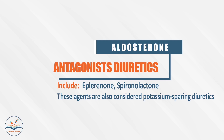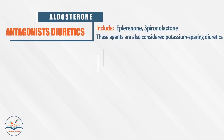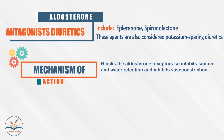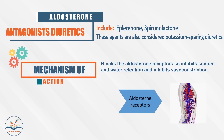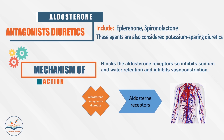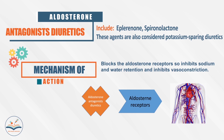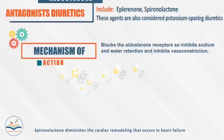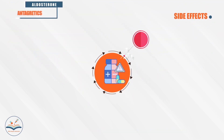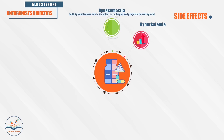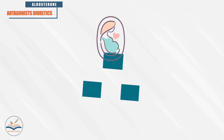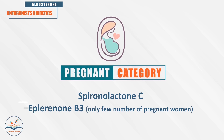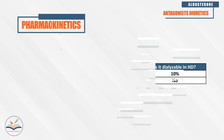Aldosterone antagonist diuretics, like spironolactone, are also considered potassium-sparing diuretics. They block aldosterone receptors in the CNS, kidneys, heart, and vasculature, inhibiting sodium and water retention and vasoconstriction. Spironolactone also diminishes cardiac remodeling that occurs in heart failure. Side effects include hyperkalemia and gynecomastia.